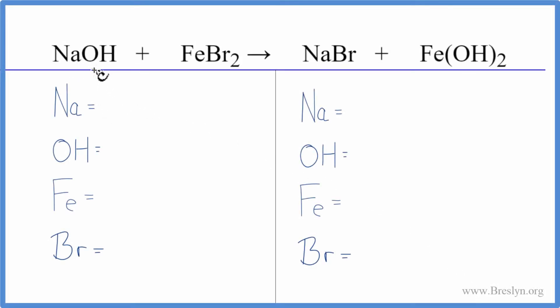In this equation we have sodium hydroxide plus iron 2 bromide. This is a double displacement reaction where the Fe and the Na switch places. When we do double displacement reactions with polyatomic ions like hydroxide, we can use a little bit of a trick. So let's count the atoms up and then we'll balance the equation.